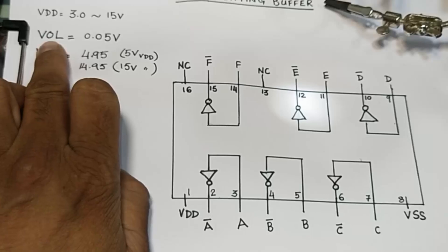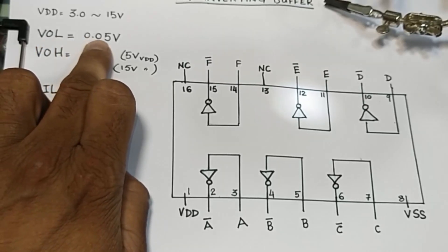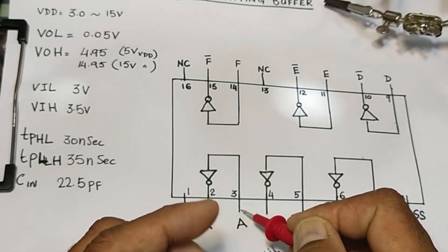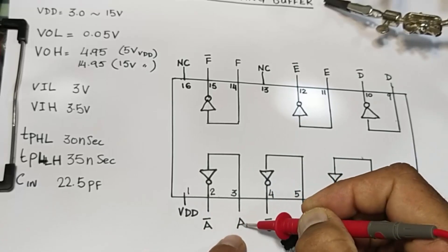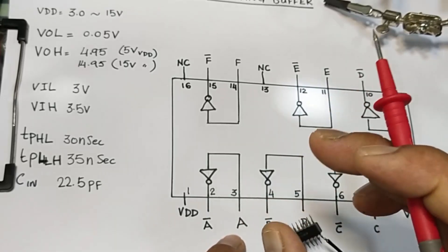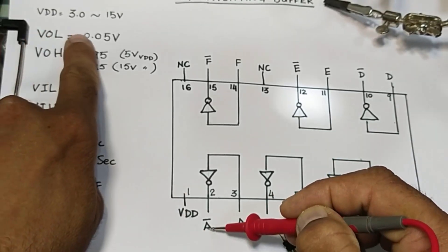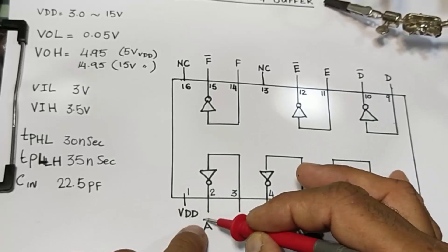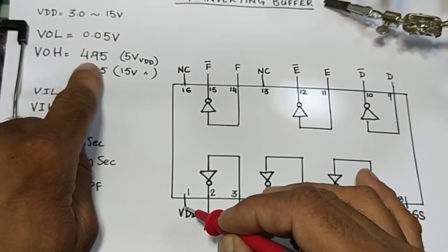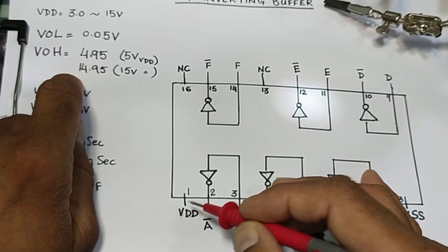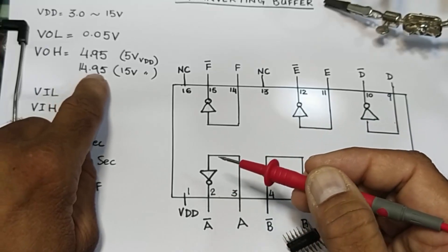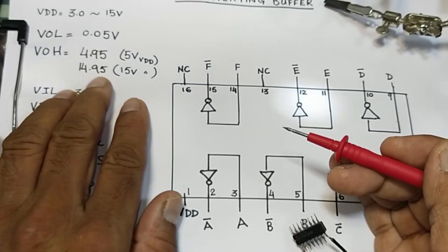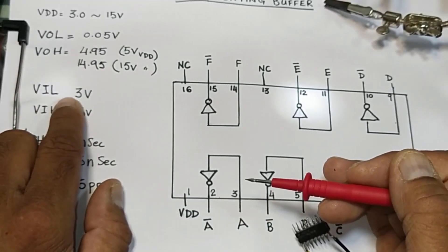VOL — voltage output low — is 0.05 volts when connected to high input. So when the input pin is high, the output will be low at 0.05 volts. VOH — when connected to ground, it must invert. At that time, if you connect 5 volt VDD the output should be 4.95 volts; if connecting 15 volts, then 15 minus 0.05 equals 14.95 volts will appear at the output.